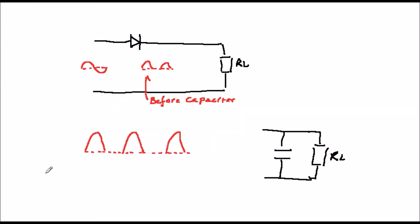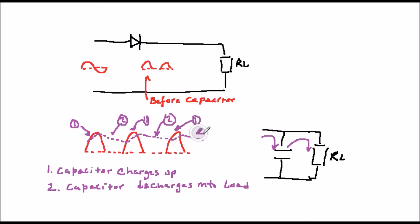The capacitor will charge up when the pulse is present, and then discharge into the load when the pulse is absent. We just need to pick a capacitor with a suitable time constant to smooth out the pulses.